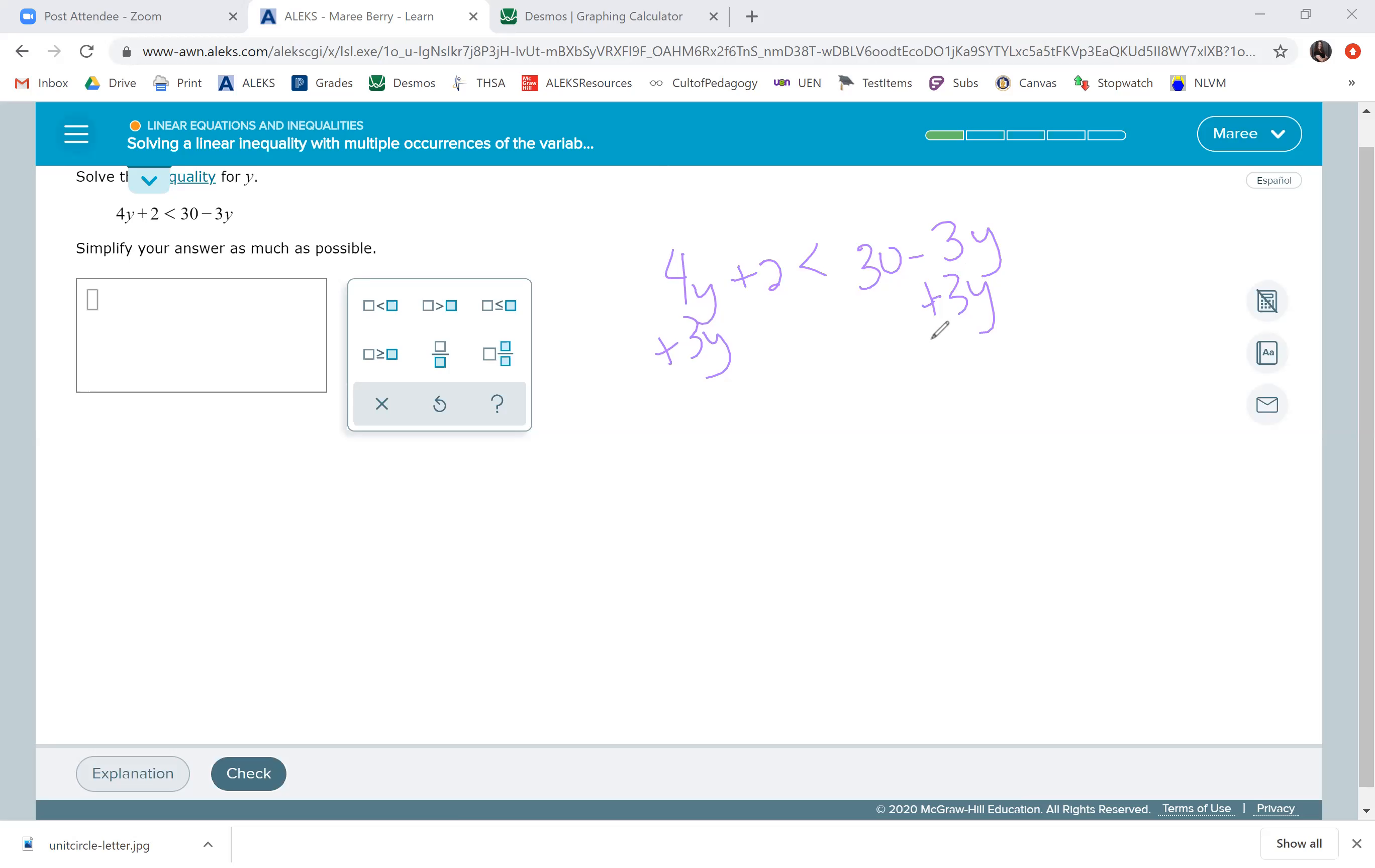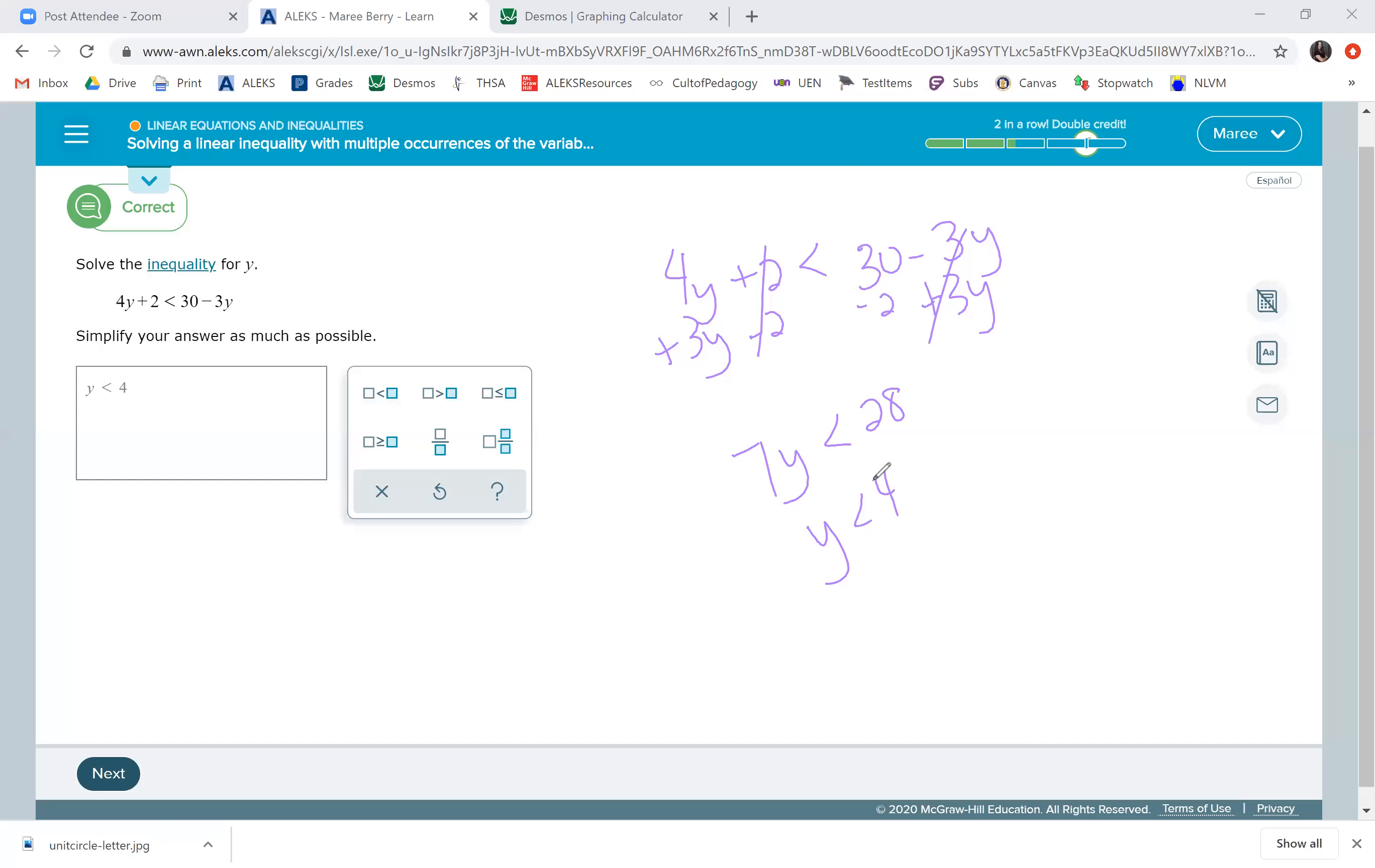Okay, so I'm going to add 3Y. That gets rid of that there. And then I'm going to subtract 2. That gets rid of that. So we have 7Y is less than 30 minus 2, which is 28. Divide by 7, Y is less than 4. So we'll put Y is less than 4. And we'll go to the next one.